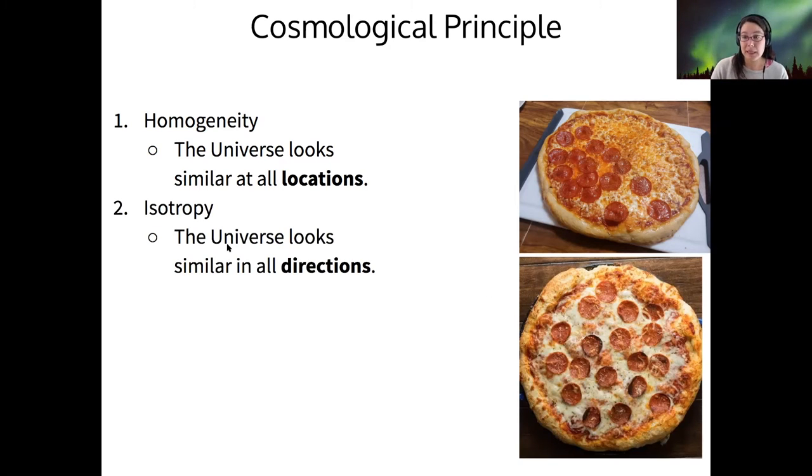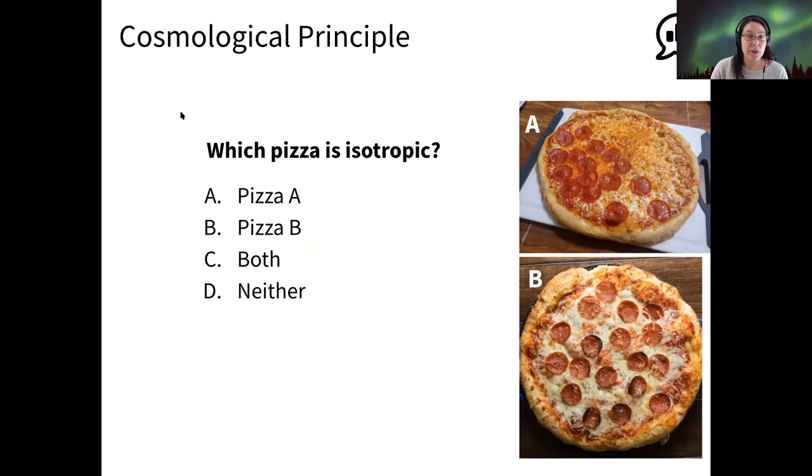The second piece of the cosmological principle is called isotropy. This is the idea that the universe should look the same no matter which direction we look in. So same question for you, which of the pizzas is isotropic?